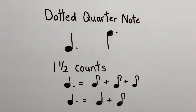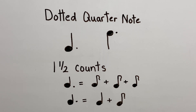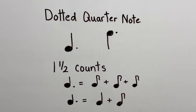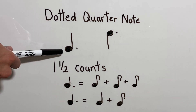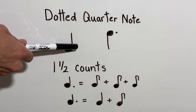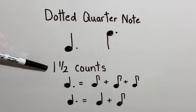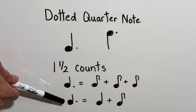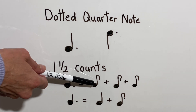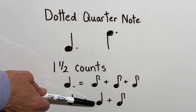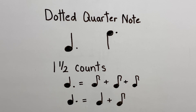The last note we're going to learn about is a dotted quarter note. We had a dotted half note and learned that the dot has to go behind the note head. A dotted quarter note is our quarter note — a filled-in note head and stem — with a dot behind it. A dotted quarter note is going to equal one and a half counts. With my musical math, this dotted quarter note is going to equal three eighth notes, or it can equal one quarter note and one eighth note. For right now, you want to memorize that a dotted quarter note gets one and a half counts.